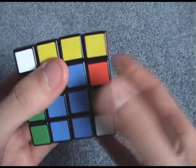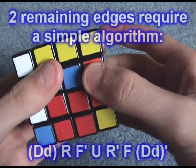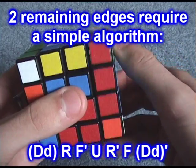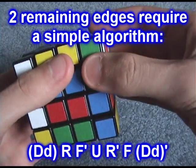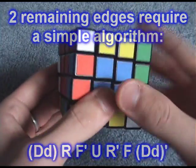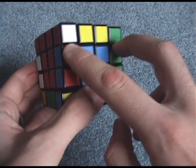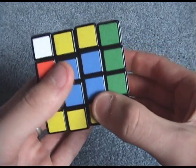And we do this algorithm: lowercase d, r, f prime, u, r prime, f, lowercase d prime. And that'll just swap them so that it matches the ones that were across from each other.